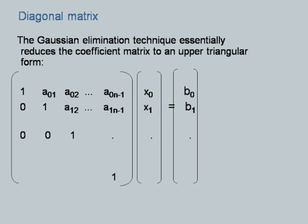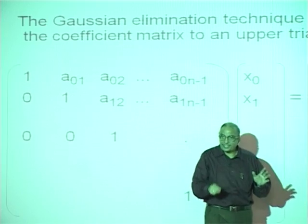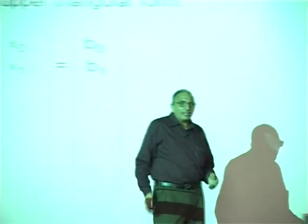After reading n, matrix A is read using a nested iteration for i from 0 to n-1 and j from 0 to n-1. Matrix B is read with a loop from 0 to n-1. The Gauss elimination then uses an outer loop for i from 0 to n-1. For each row i, the divisor is set to A[i][i]. The diagonal element A[i][i] is explicitly set to 1. All subsequent elements in that row — j from i+1 to n-1 — are divided by the divisor. The corresponding B[i] is also divided by the divisor.